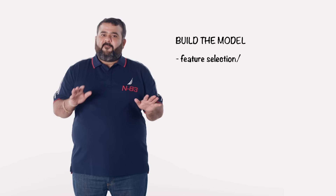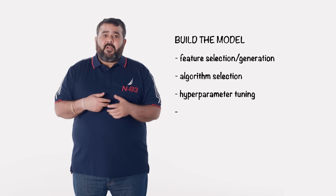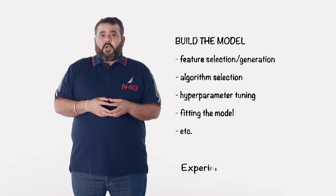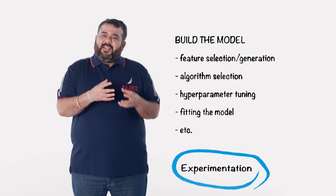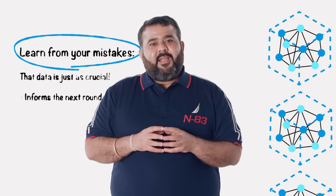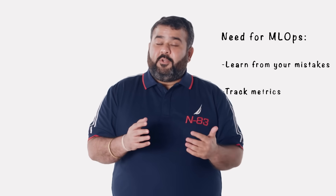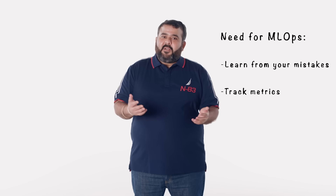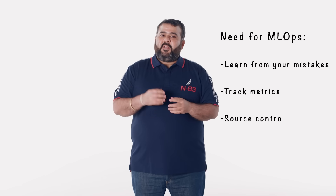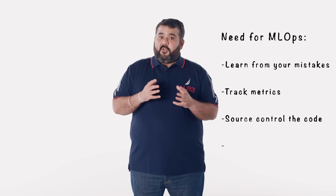The next step in the ML workflow is to build the model. This comprises several sub-steps like feature selection and generation, algorithm selection, hyperparameter tuning, fitting the model, etc. This is also called experimentation, as you're in a trial-and-error sort of experiment with various combinations of features, algorithms, and hyperparameters until you get the combination that generates a suitable model for you and your business. The trials that do not reap the desired result are also important as they inform the next set of combinations to try. This is where another set of needs arise for MLOps: to track metrics of the experiment runs, so that one can look back to determine what attributes to tweak further.